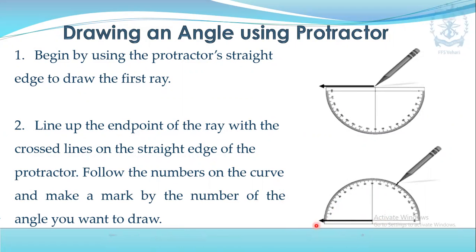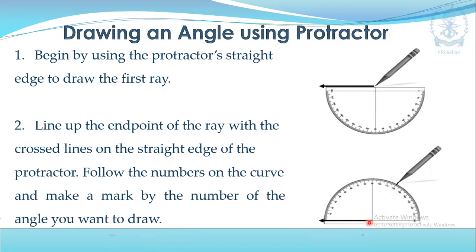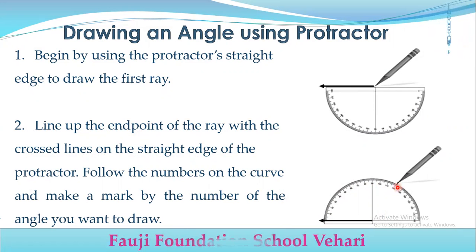You can see the outer scale reads: 0, 10, 20, 30, 40, 50, 60, 70, 80, 90, 110, 120. Here is the angle of 120. You put a dot at the 120 mark on the outer scale. Then you remove the protractor.